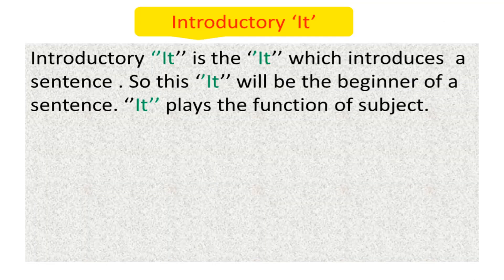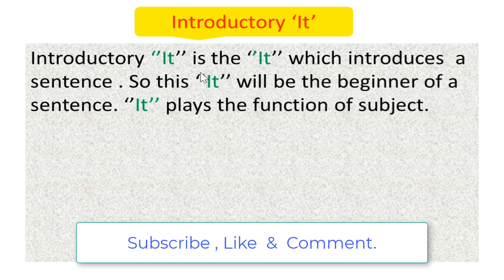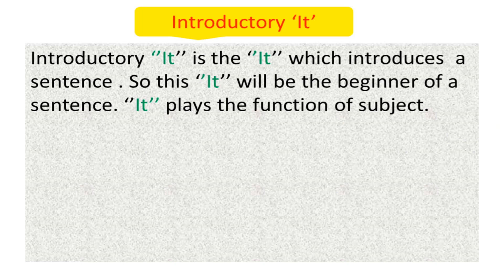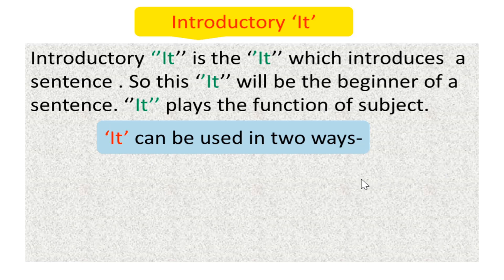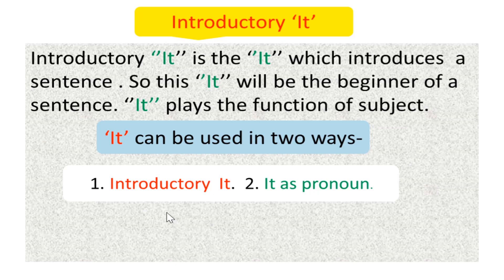Introductory 'it' — this is the target point of learning. Introductory 'it' is the 'it' that introduces sentences. It has no active exact meaning; this 'it' will be the beginning of a sentence. It will play the function of a subject. 'It' can be used in two ways in English grammar: number one, introductory 'it'; and number two, 'it' as a pronoun.